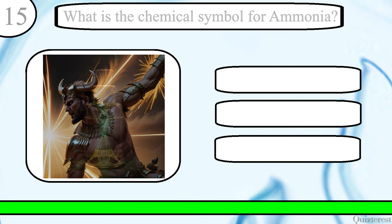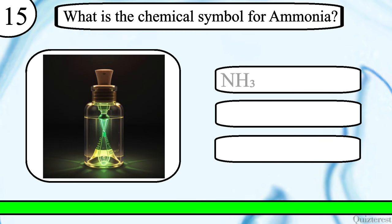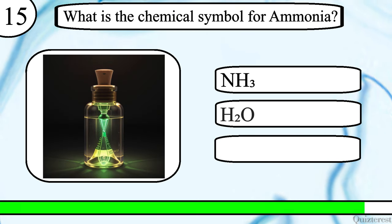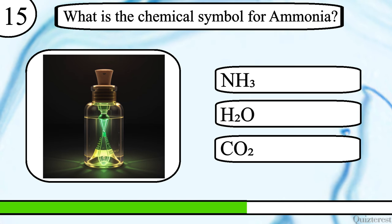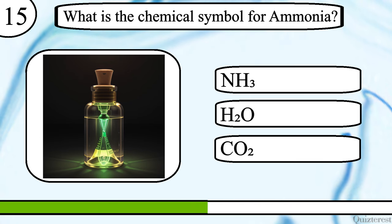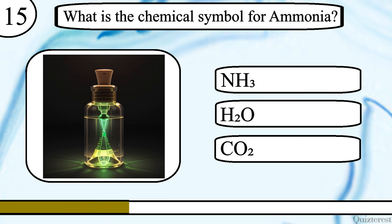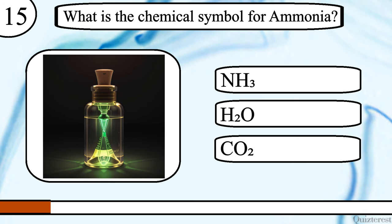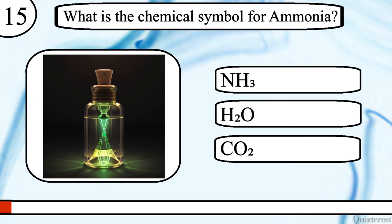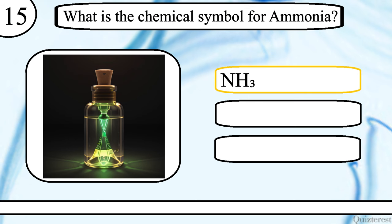Question 15. What is the chemical symbol for ammonia? NH3, H2O, or CO2? The correct answer is NH3.